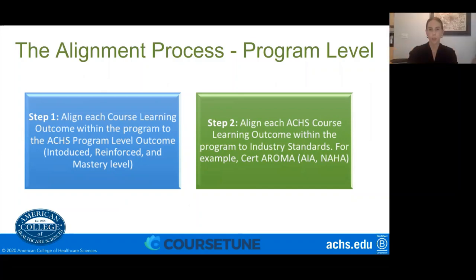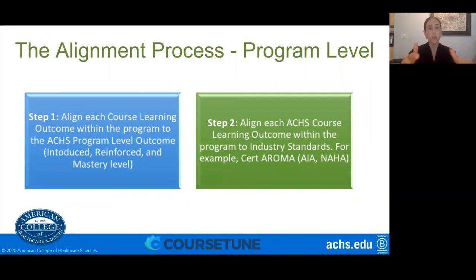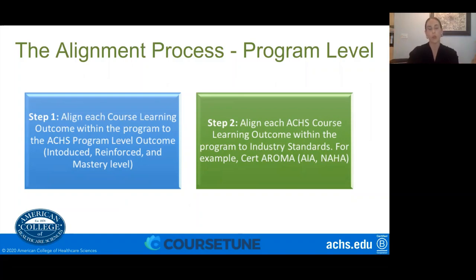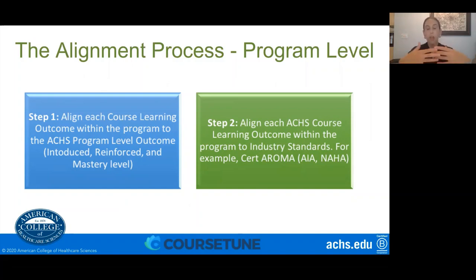Our second process is the program level alignment. After going through course level alignment, we move to the individual programs. There are only two steps: we align each course learning outcome within the program to the ACHS program level outcomes — this is where we get really granular with introduced, reinforced, and mastery level. This type of alignment creates the great curriculum map. The second step, if there are industry standards, is aligning the program level outcomes with those standards. For example, with the certificate in aromatherapy programs, we align with AIA and NAHA level standards.